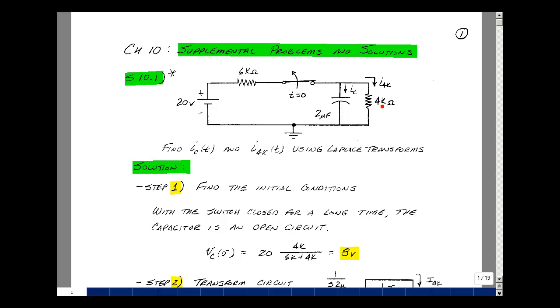So the voltage across the capacitor is the voltage across the 4K resistor, and since the 6K current is the same as the 4K resistor current, we could use a voltage divider. That would be 4K over 6K plus 4K times 20, and that turns out to be 8 volts.